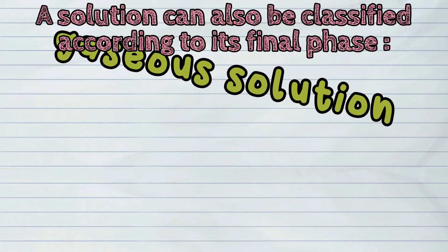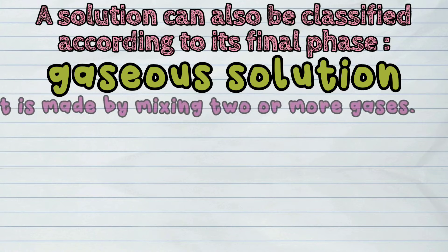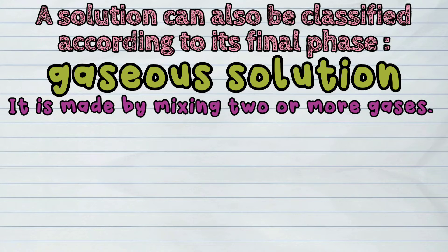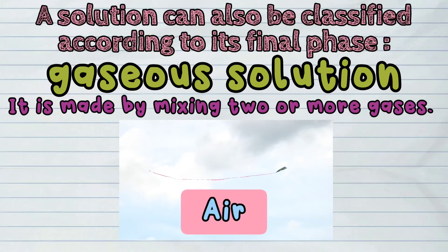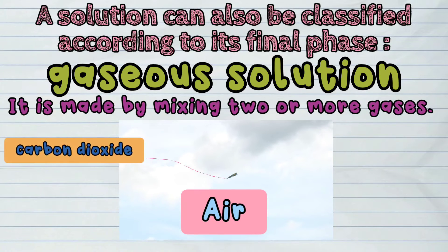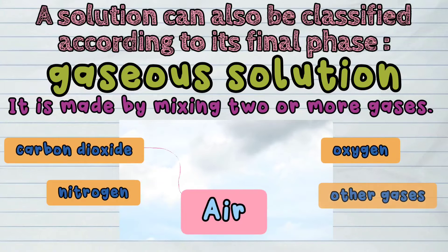Second, a gaseous solution. It is made by mixing two or more gases. For example, air is a mixture of carbon dioxide, nitrogen, oxygen, and other gases.